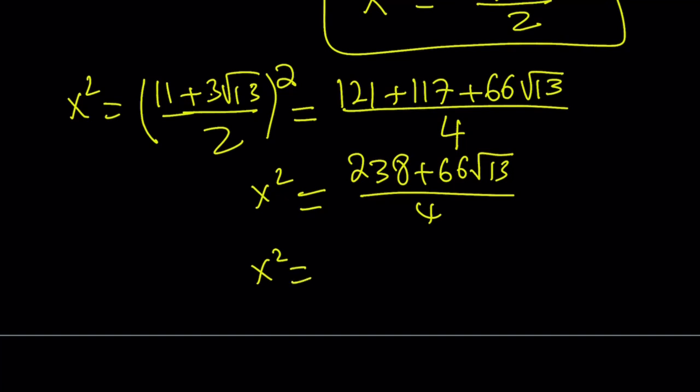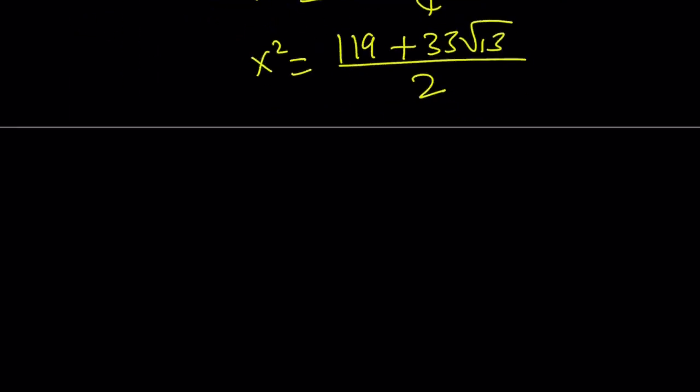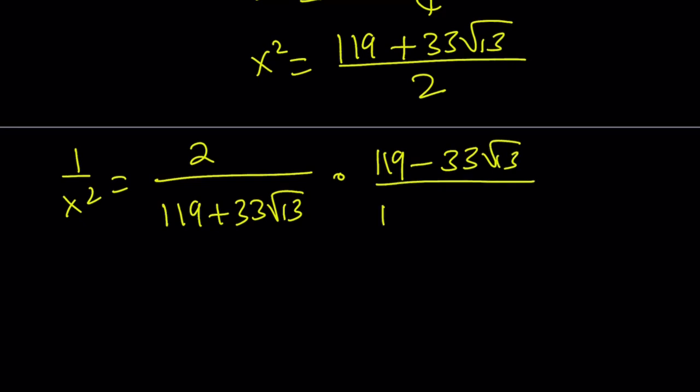So when you add these two numbers up, you're going to get 238 plus 66 root 13 over 4. This is x squared. Let's go ahead and simplify. Divide everything by 2. You're going to get 119 plus 33 root 13 divided by 2.